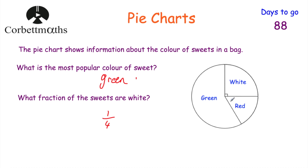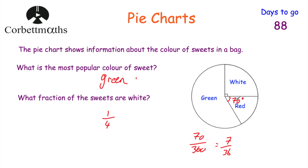The second question: what fraction of sweets are white? That's a right angle — a quarter circle — so a quarter of the sweets are white. If for instance the angle were 70 degrees and you weren't sure what fraction it was, you could write it as 70 over 360 and cancel it down. Dividing by 10 gives 7 over 36. So if you know the angle you can write it as a fraction out of 360 and simplify.